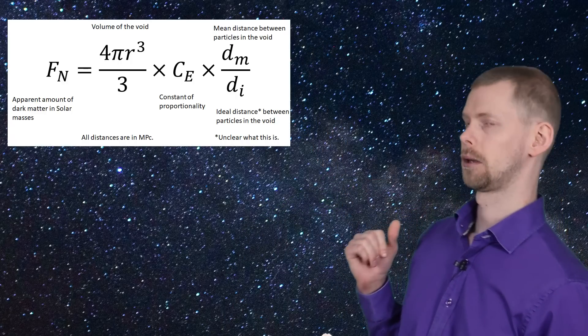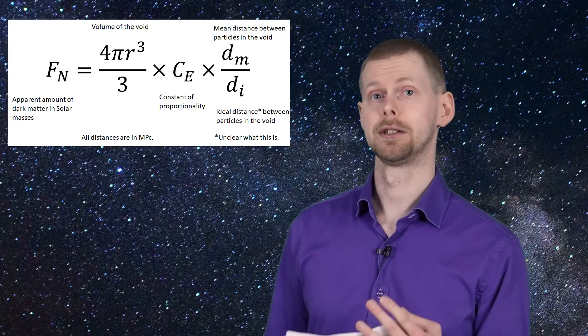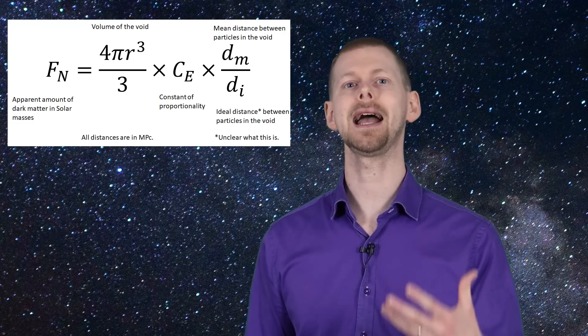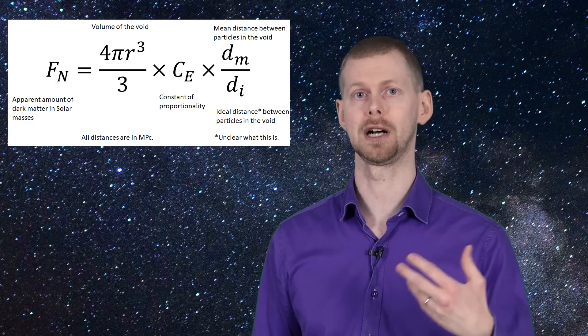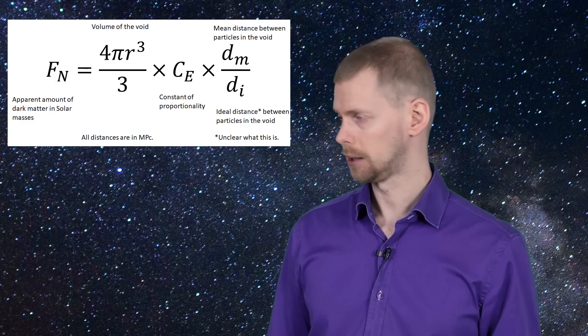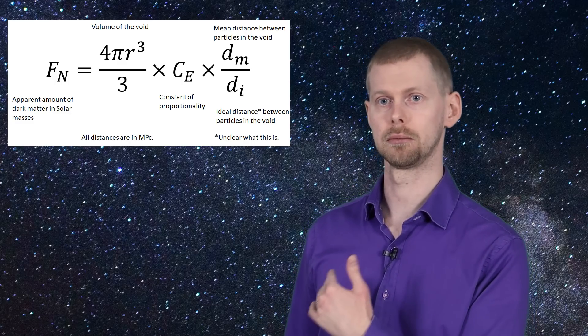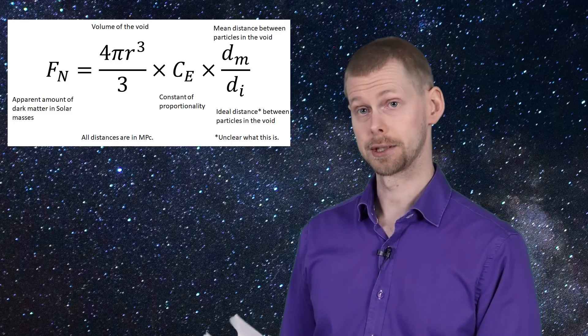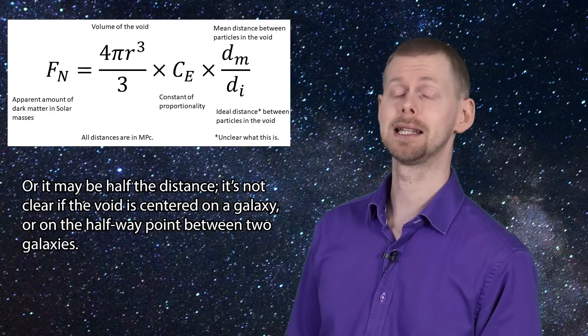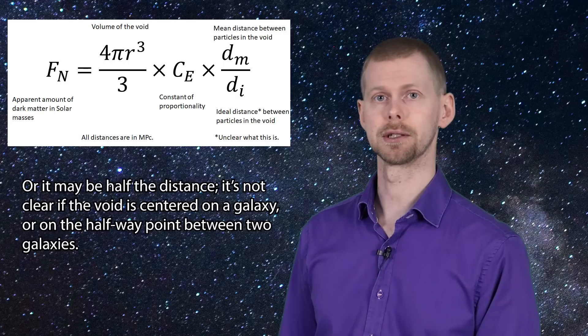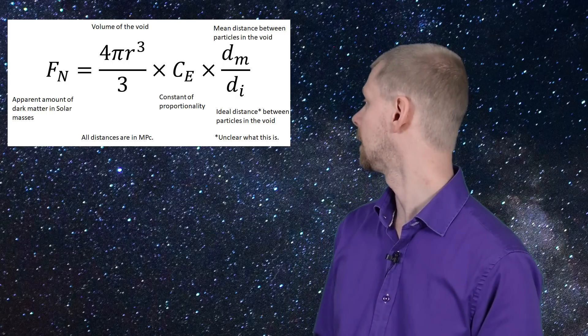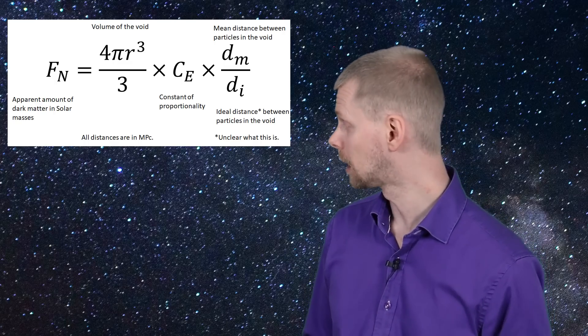I am going to address the math, and the math isn't in the video. In the paper, you actually have math in it. I'm going to put the equation here, where F is not a force. It is the effect, the magnitude of the effect expressed in solar masses worth of apparent dark matter. And the M and the I are the mean distance between particles in the void that we're looking at, and R is the distance across the void. The I is the ideal distance, and I'm not clear on what that means in this context. I'm sorry. I don't know. But that really doesn't matter because the way you calibrate this is by looking at the Milky Way and looking at how much apparent dark matter there is in it.